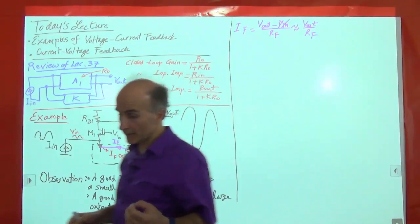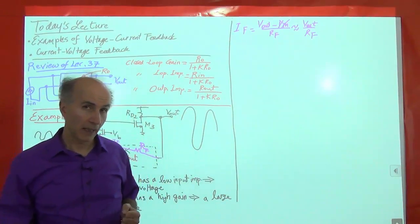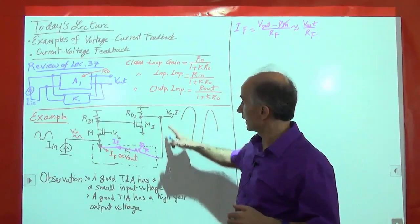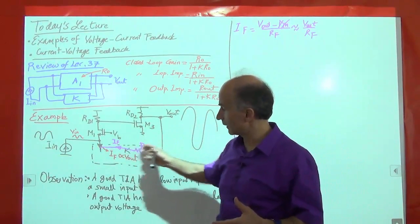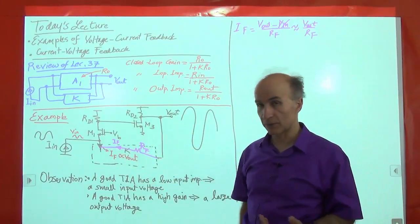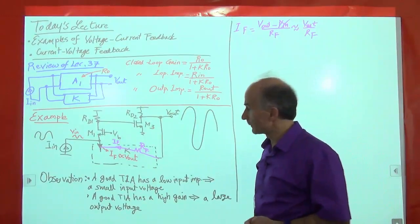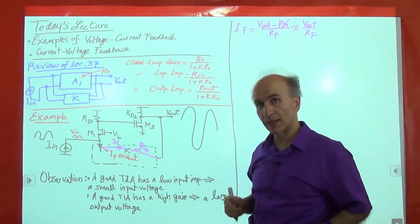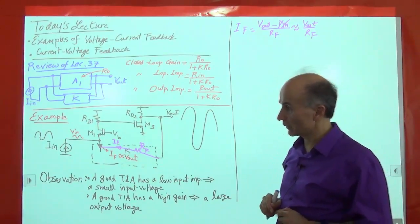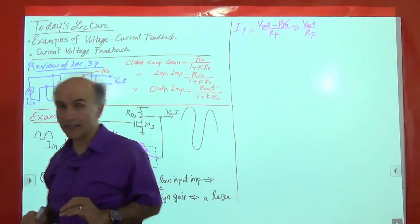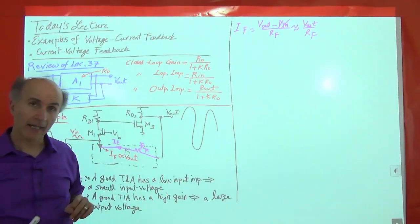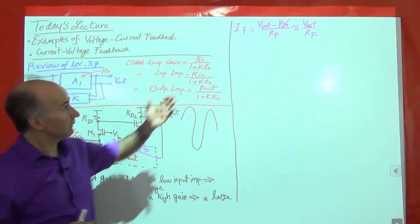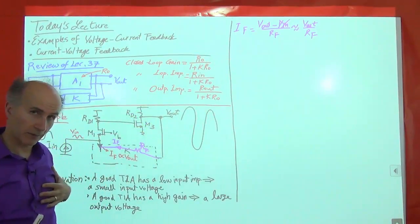In other words, a resistor can approximate a current source if one voltage on one side is much greater than the other, so that the current through it is approximately given by that larger voltage divided by the resistance. In practice, we would like RF to be somewhat large so that it doesn't load the drain resistor. The key message is that we can use a resistor as a feedback network that senses the voltage and returns a current — the result of these observations and approximations.